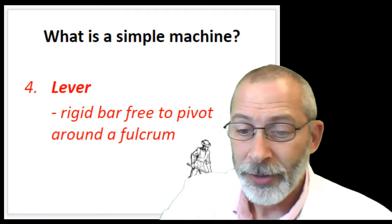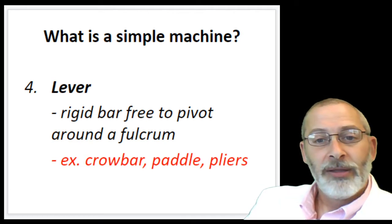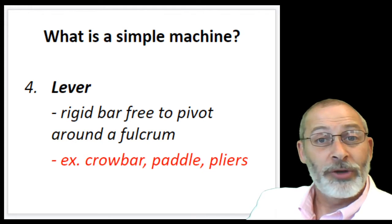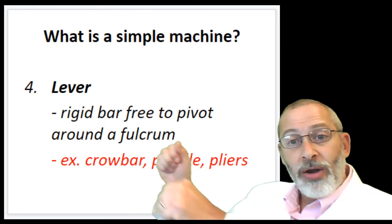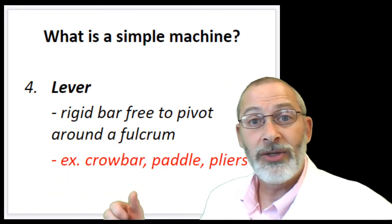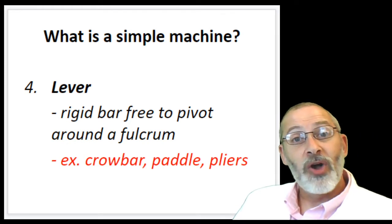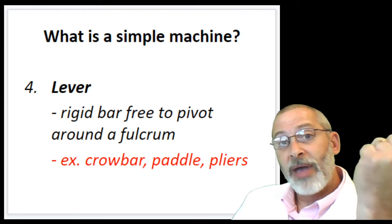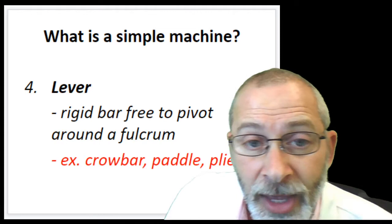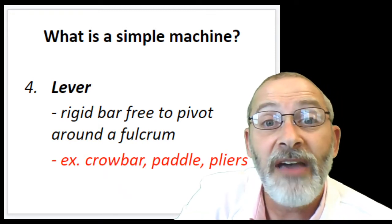You may have struggled with this one, but here are some examples: a crowbar, kind of like the one in that picture — it could be a stick or metal. A paddle: if you've ever gone canoeing, kayaking, or in a rowboat, a paddle or oar is a rigid bar free to pivot around a fulcrum — whether that fulcrum is your other hand or the boat itself — to move you through the water. A pair of pliers is also a great example of a lever. Imagine one side stationary and the other pivoting around a fulcrum to accomplish work. I'm going to show you a picture — see if you can pick out the lever.